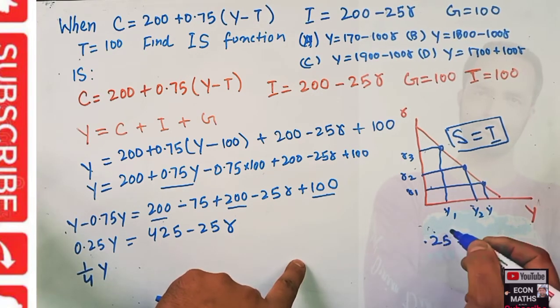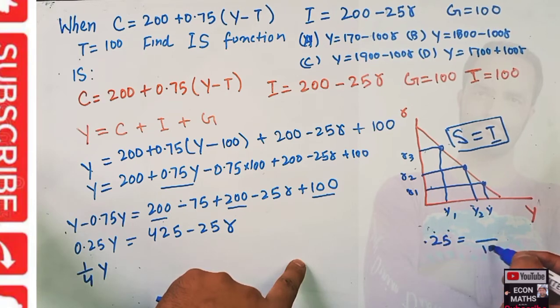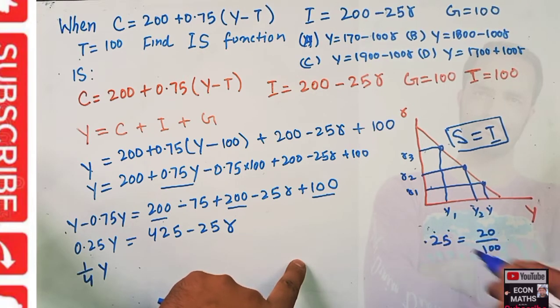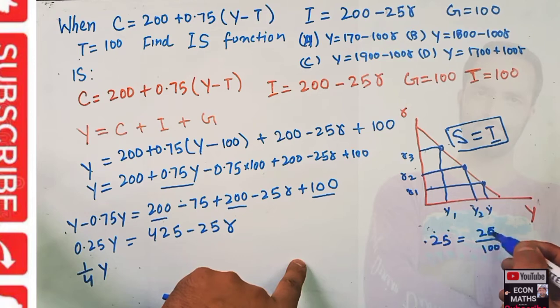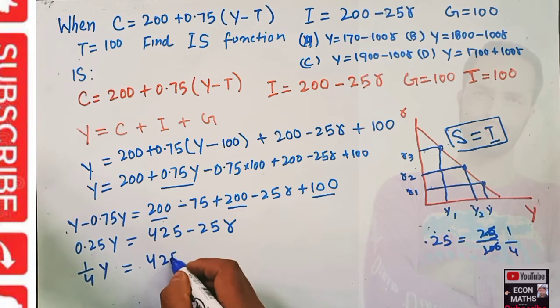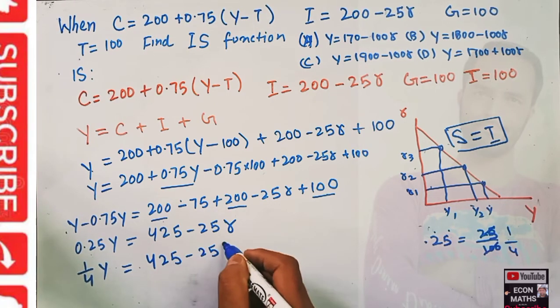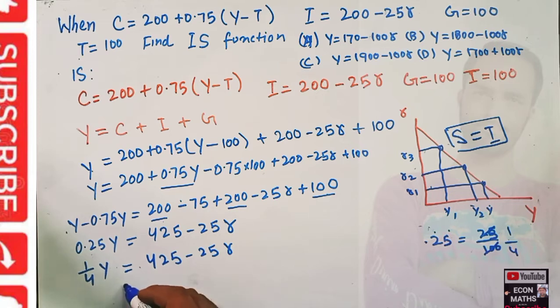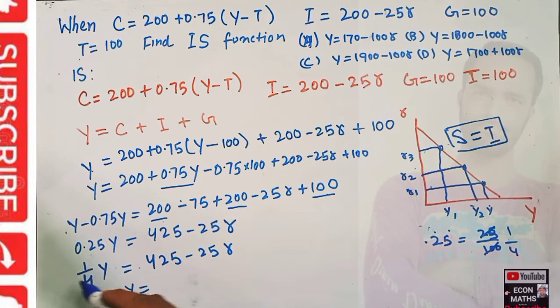0.25 can be written as 1/4. When we divide 25 by 100 and remove decimals, we have 25/100 = 1/4. So (1/4)Y = 425 - 25r. We can write Y equals, if we transpose this term it gets multiplied to each term.